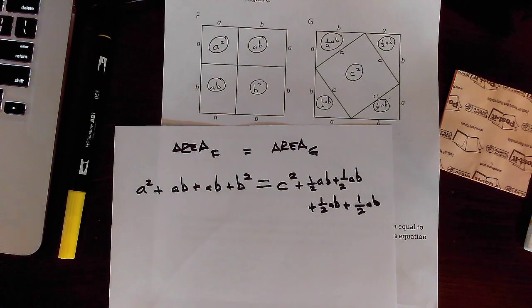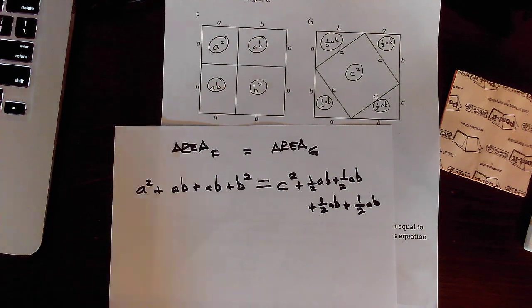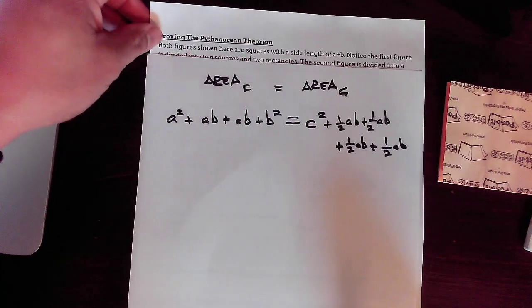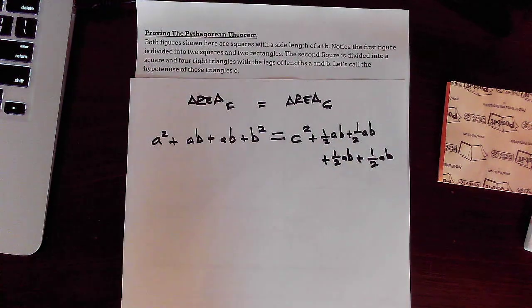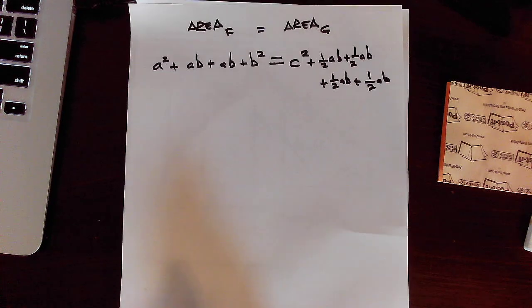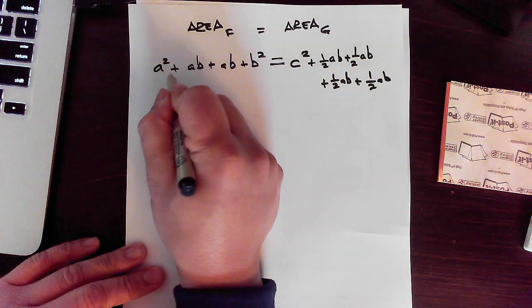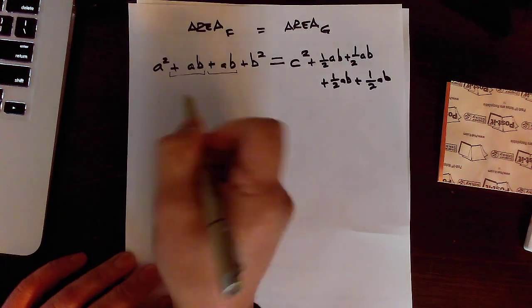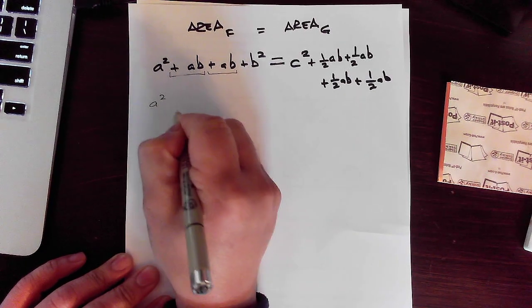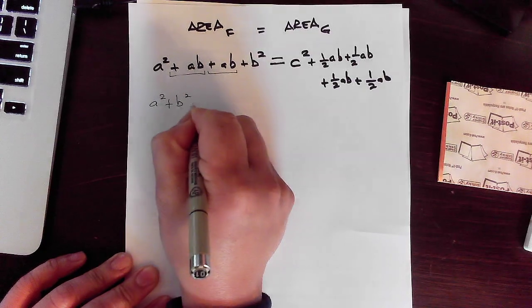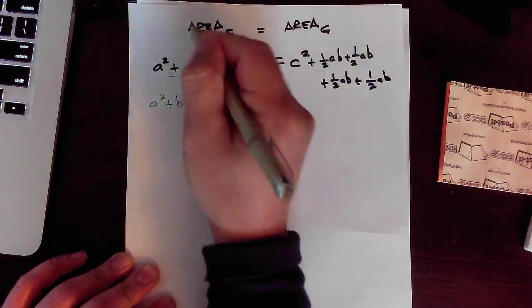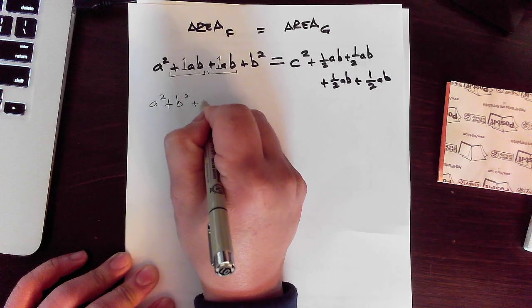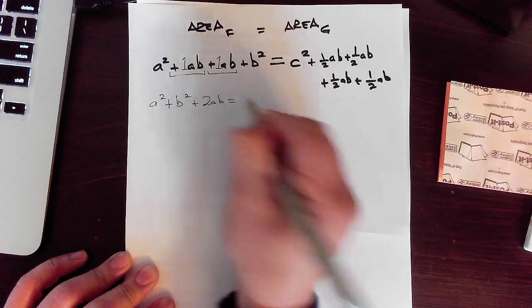So we're going to combine like terms. And I like to do that using underlines because I don't always have a highlighter handy. I don't need that. This plus AB is the same as this plus AB. So let's clean it up a little bit. I'll have A squared plus B squared plus. Now. There is an invisible one here. I just want you to know that my friends will remind you of that. So that will be plus 2AB.